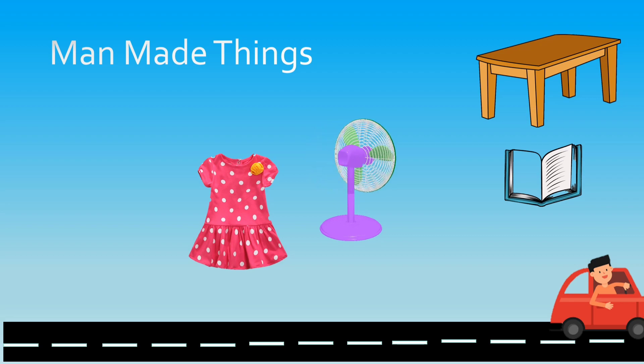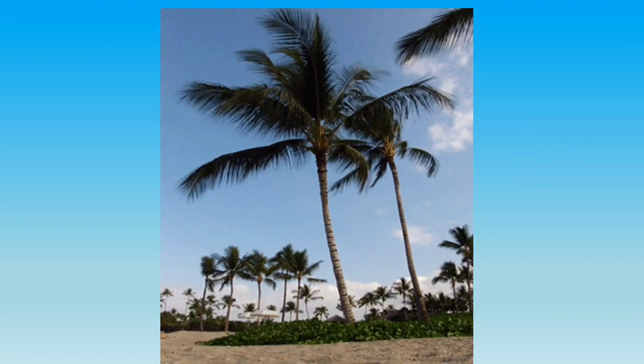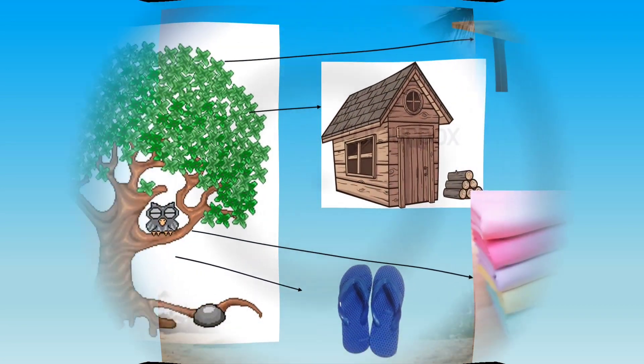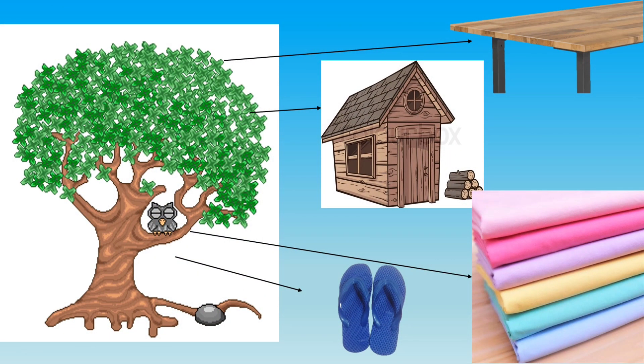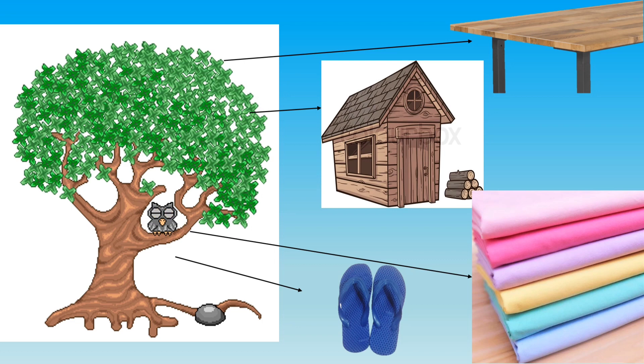We see many trees around us. These trees are natural things, but man has made many things using these trees. Trees are cut down to make things like furniture, to build houses, clothes, and many more things. So trees are natural things, but clothes, houses, slippers, etc. are man-made things.